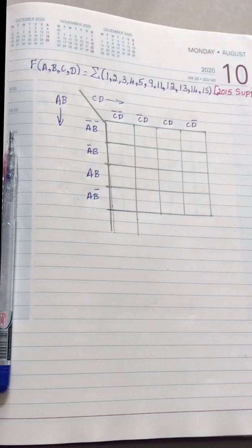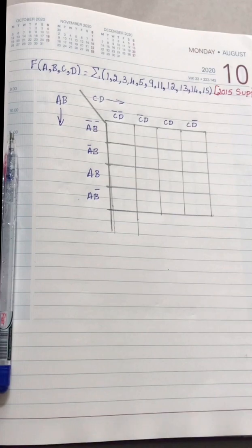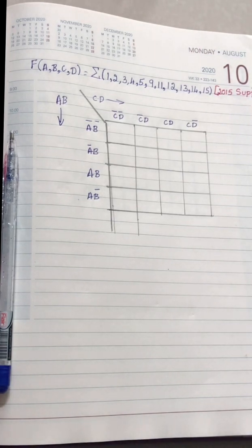Hello everyone, welcome to my channel. My name is Ashwini and today we are going to solve the second PUCY 2015 supplementary, 27th question — a K-map problem. This is a five-mark question and the first question in the fourth main. If you have not subscribed to my channel, please subscribe. The link for the 2015 question paper K-map solution is given in the description box.